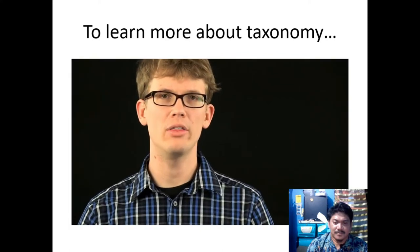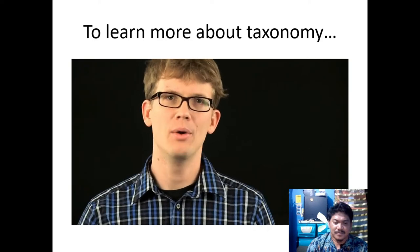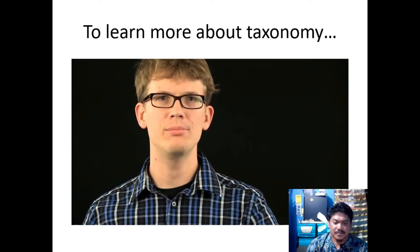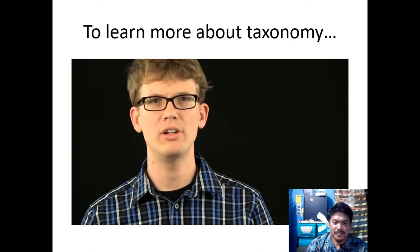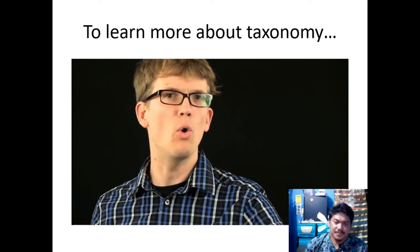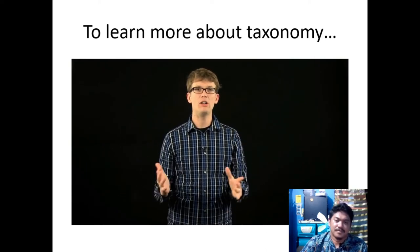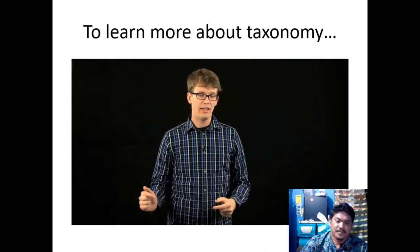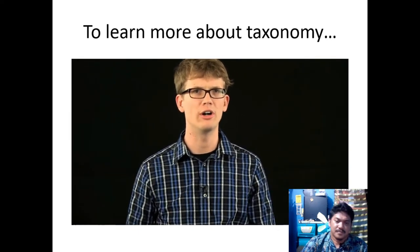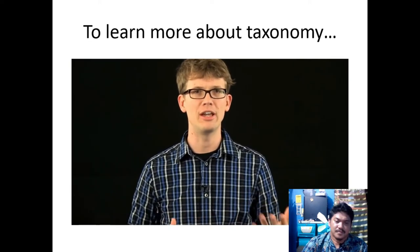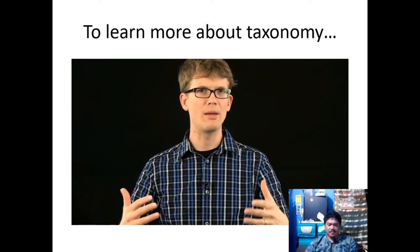Every living thing on this planet is related to every other living thing. If you go far enough back, we all have a common ancestor — something that both a starfish and a blue whale, or even an oak tree and a salmon, are descended from. The trick of taxonomy is basically figuring out where all those branches of the evolutionary tree are and finding convenient labels to help us understand all of these remarkable interrelationships.